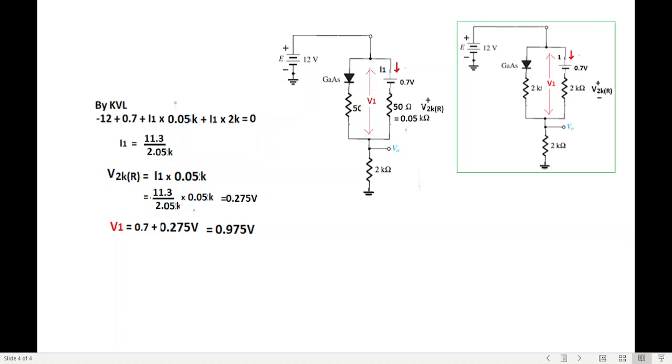So you can see the change in the value of the resistance has made the difference. So it is better whenever this type of circuit is given that we verify whether the condition of turn on or both the diodes are valid or not.